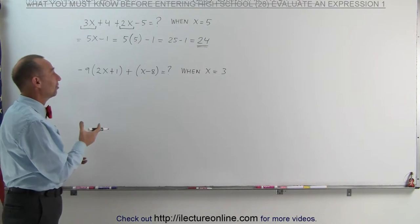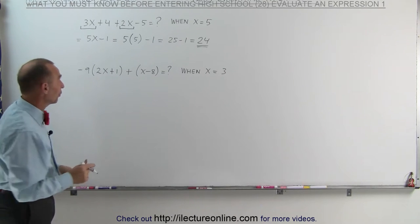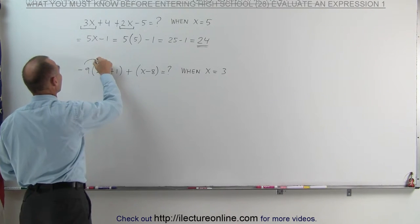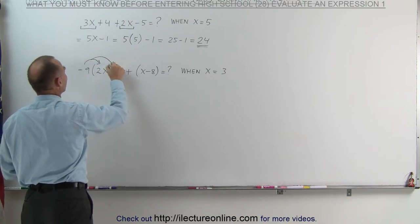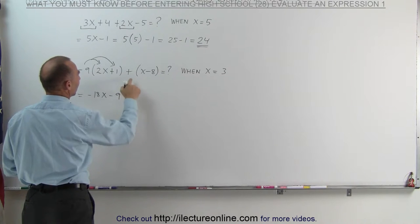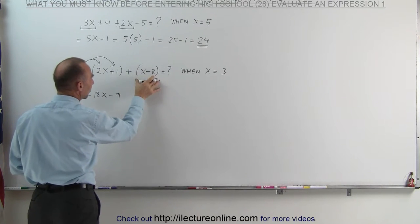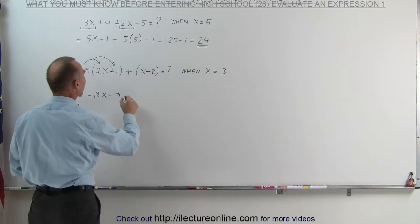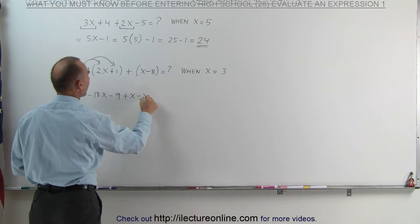On the second example, we have parentheses. We need to get rid of those parentheses first. So we're going to distribute the minus 9 on the first and the second term. This now can be written as minus 18x minus 9. And here, since this is plus what's inside the parentheses, we can simply remove the parentheses plus x minus 8.